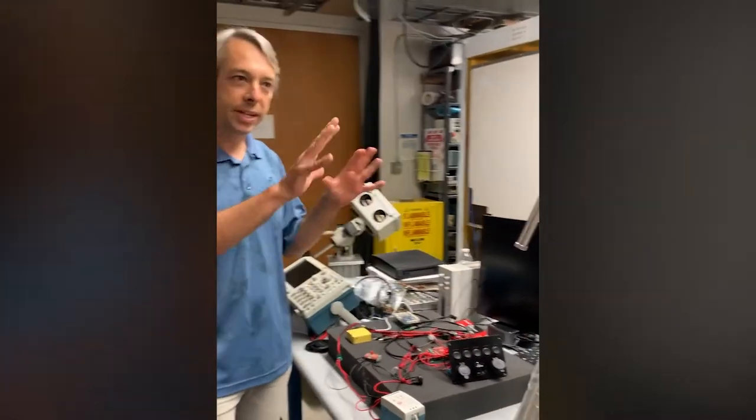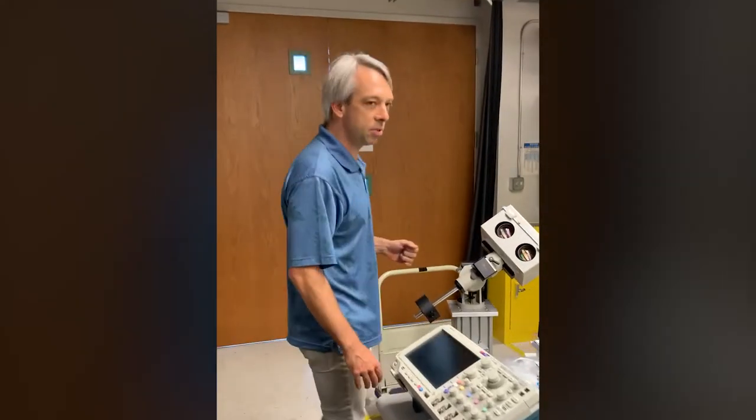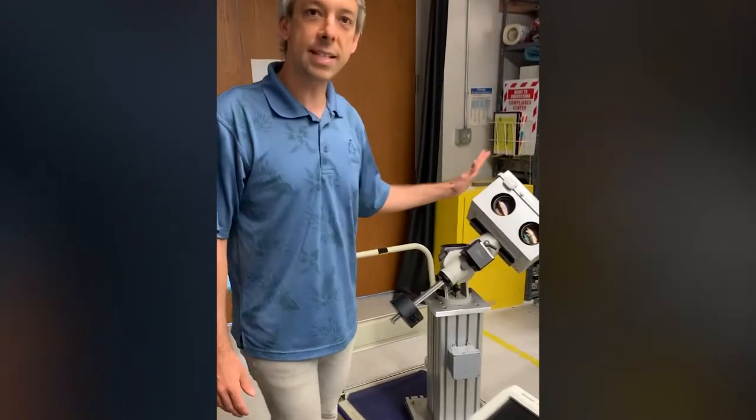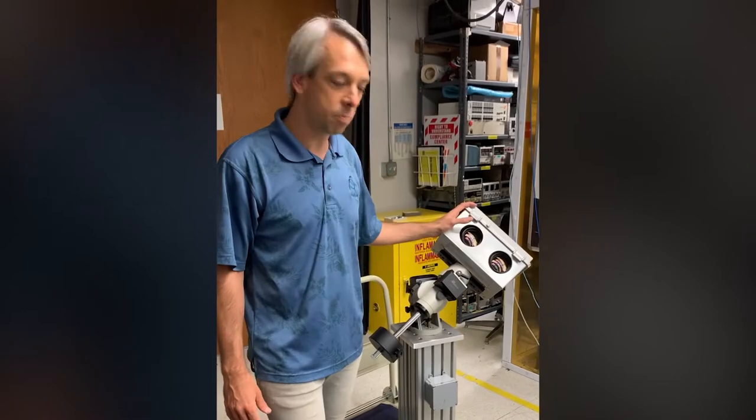And what we do here is we put it all together and when it's done this is what the Panoptes unit looks like. So essentially it's a very small robotic telescope. It's got two eyes.